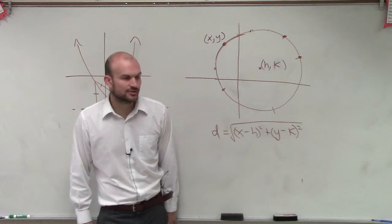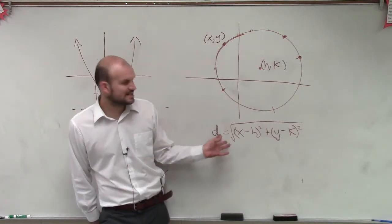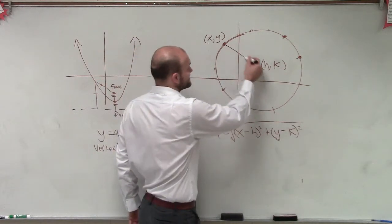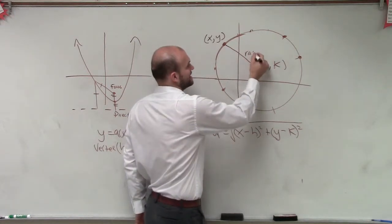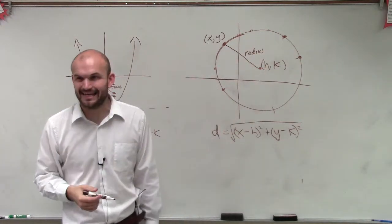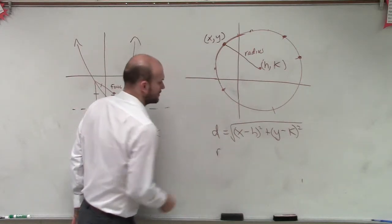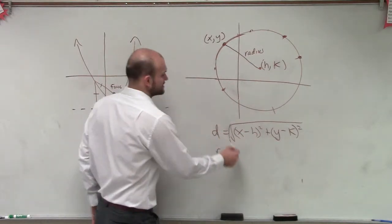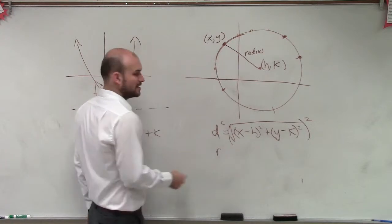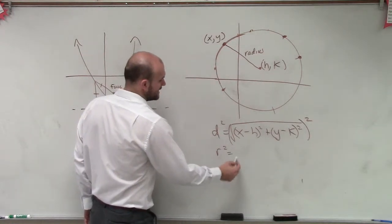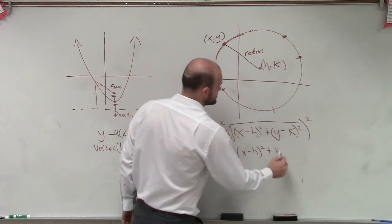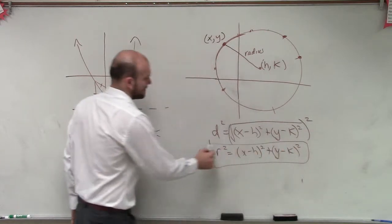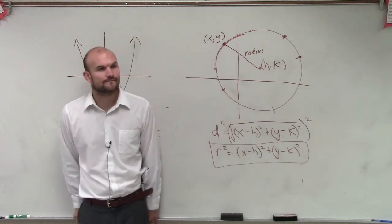So now, what we could do — if we want to write a formal definition — what does d represent? Distance. Distance is your radius. So rather than calling the distance d, let's call the distance r. And ladies and gentlemen, I don't really want to deal with this square root. So I'm going to square both sides. Therefore, we can say r squared equals x minus h squared plus y minus k squared. And that is now our definition of a circle.